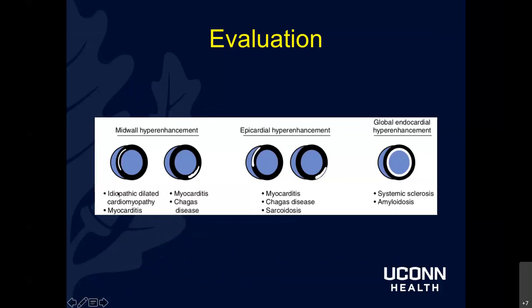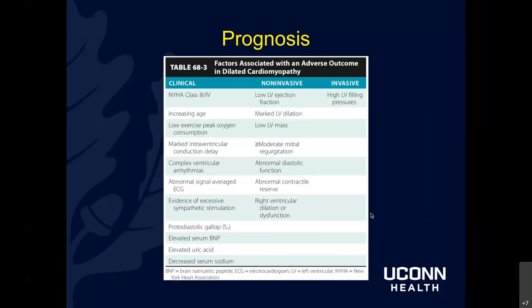Cardiac MRI with late gadolinium enhancement helps determine the etiology of dilated cardiomyopathy better than echo alone. Mid-wall hyper-enhancement can suggest idiopathic dilated cardiomyopathy or myocarditis. Epicardial hyper-enhancement might suggest sarcoid, Chagas, or myocarditis. Global and endocardial hyper-enhancement points in another direction. I find cardiac MRI to be a very helpful additive evaluation component when determining the underlying etiology.